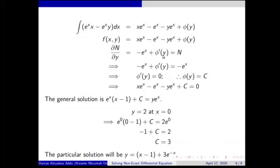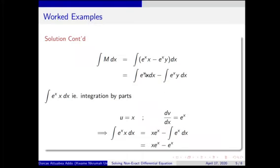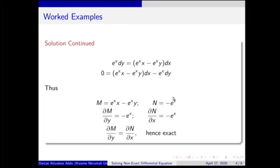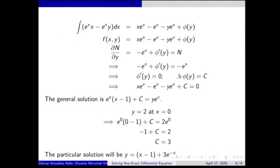We find the derivative of the function with respect to y and equate it to N. From our earlier work, N is equal to minus e^x. Taking the derivative and equating gives us zero. When a derivative always equals zero, the function must be a constant. Therefore, the function c(y) is simply a constant.